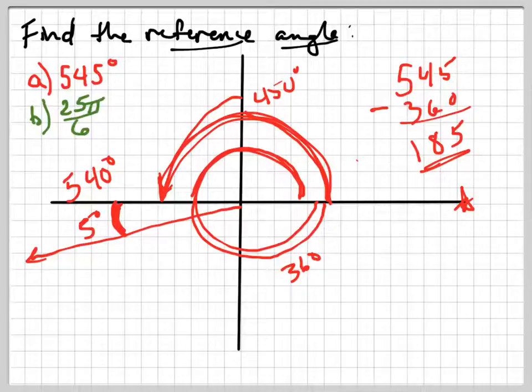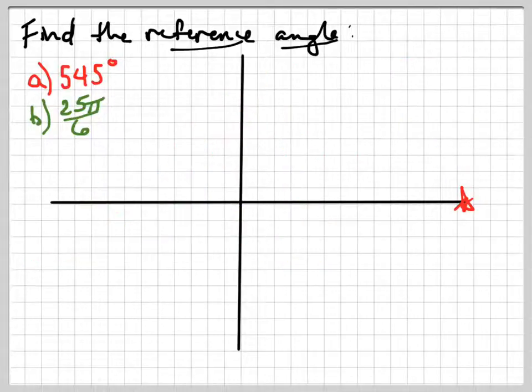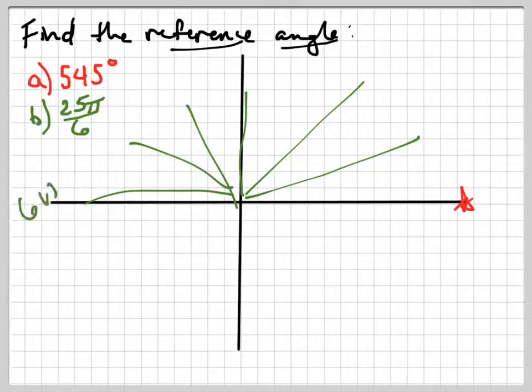Alright, so let's try 25π over 6. Now, here's what I like to do with π over 6. If you watch the videos that I recorded earlier on the unit circle, there's 1, 2, 3, 4, 5, 6. So, that's 6π over 6 is the same as π, which is 180 degrees.